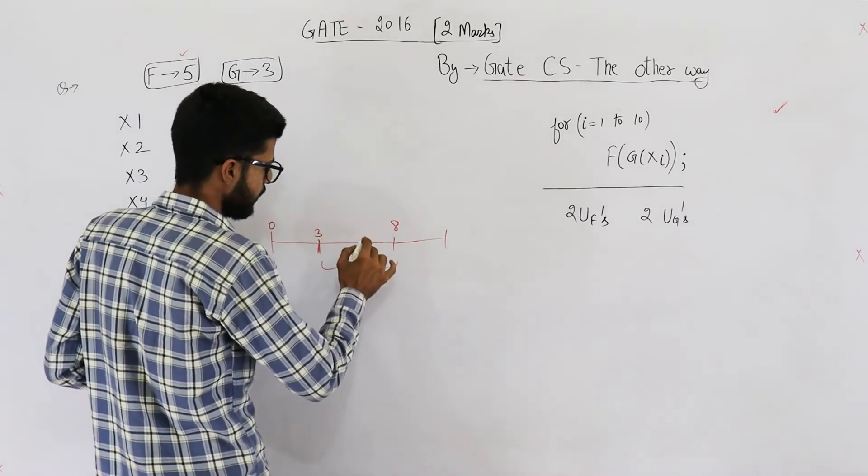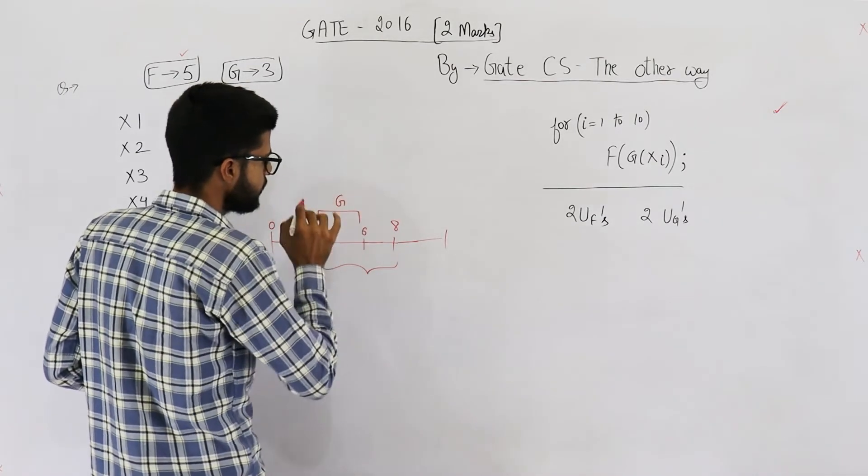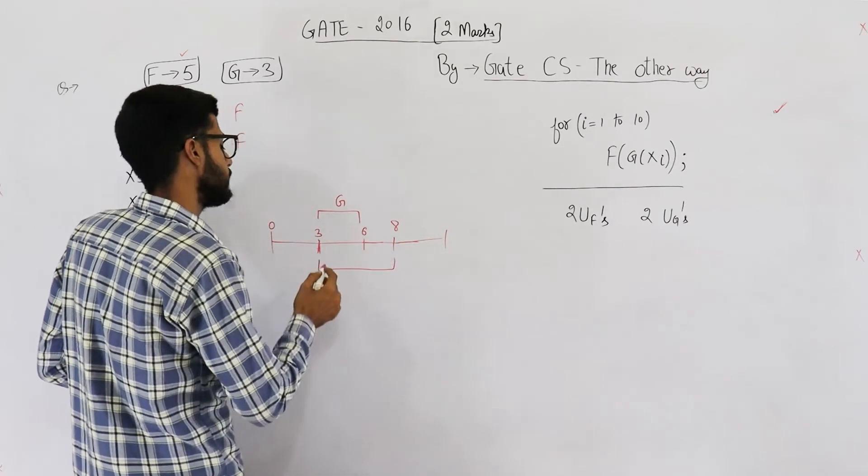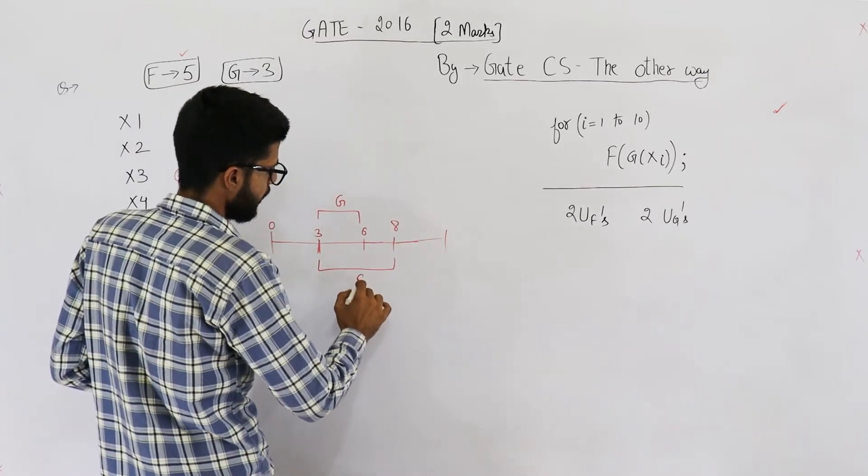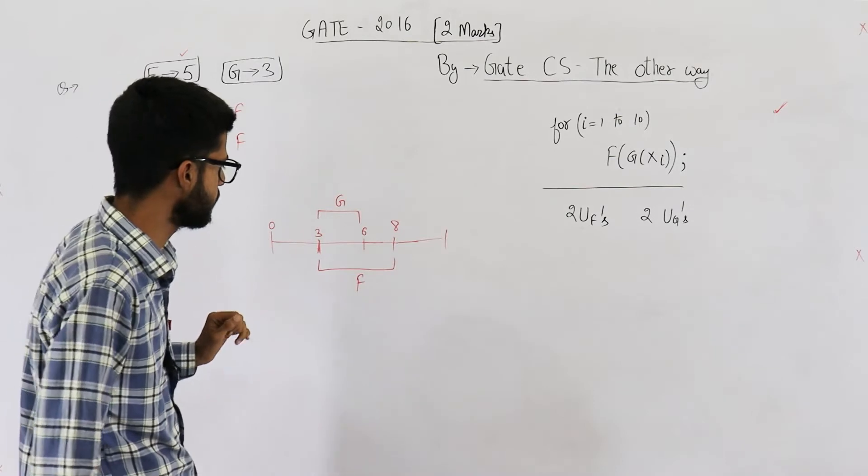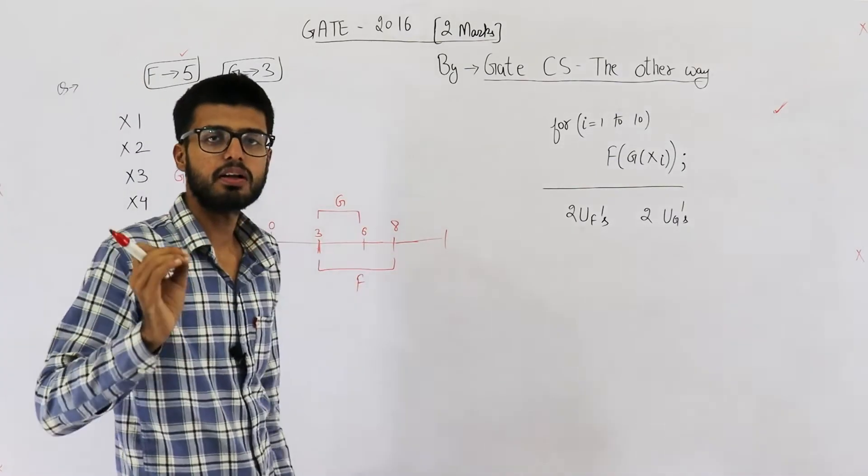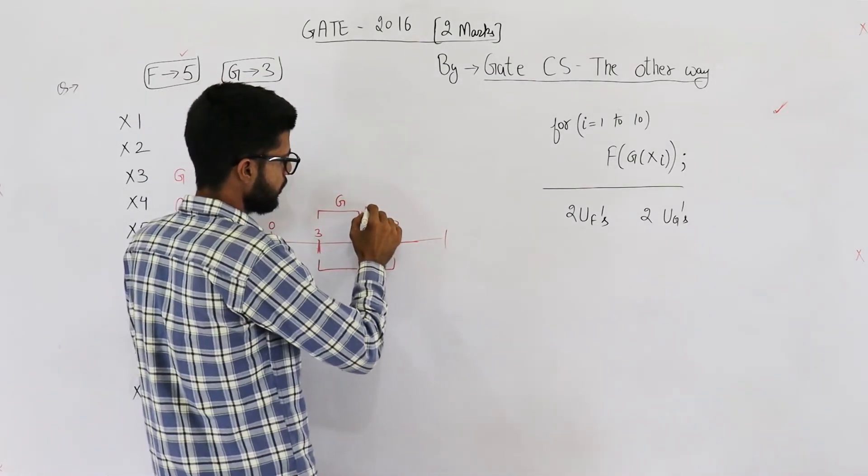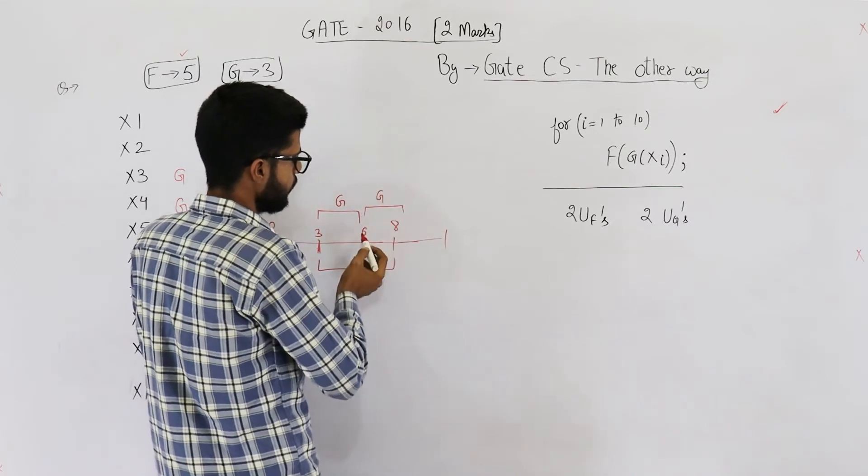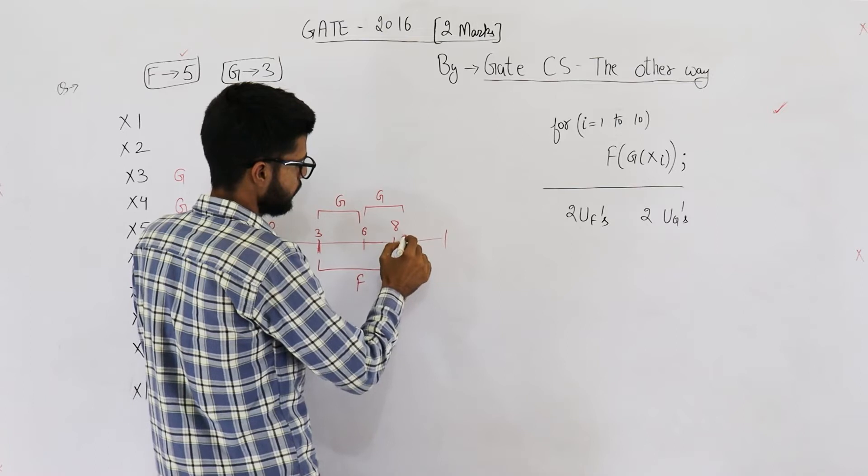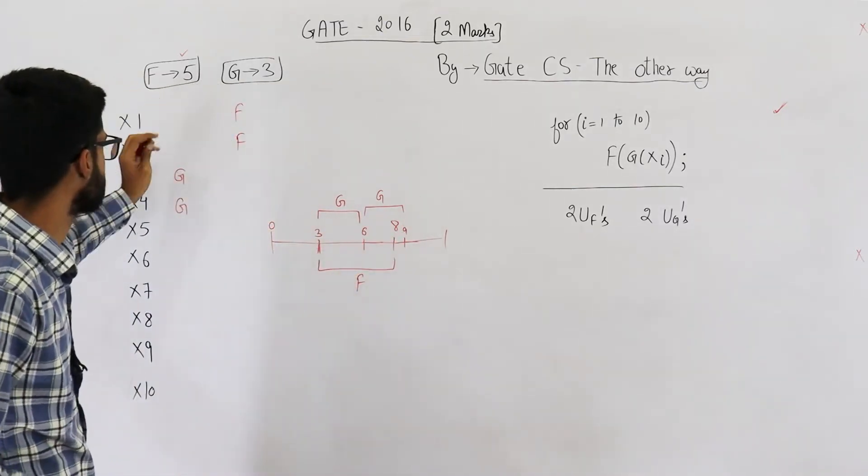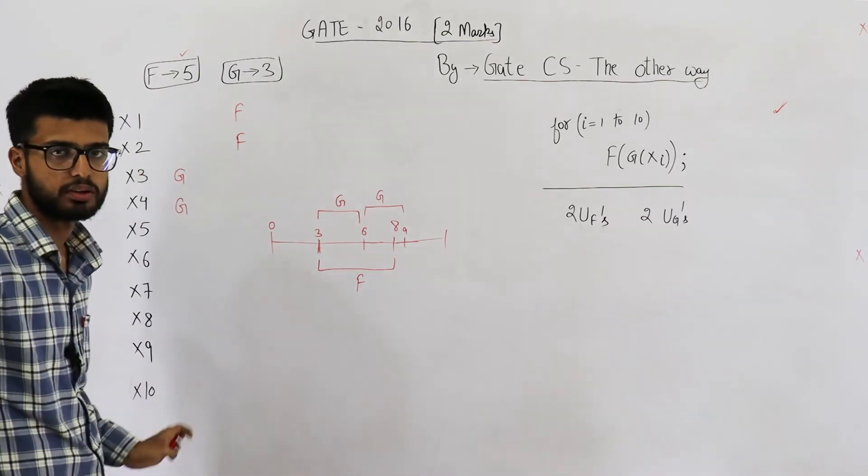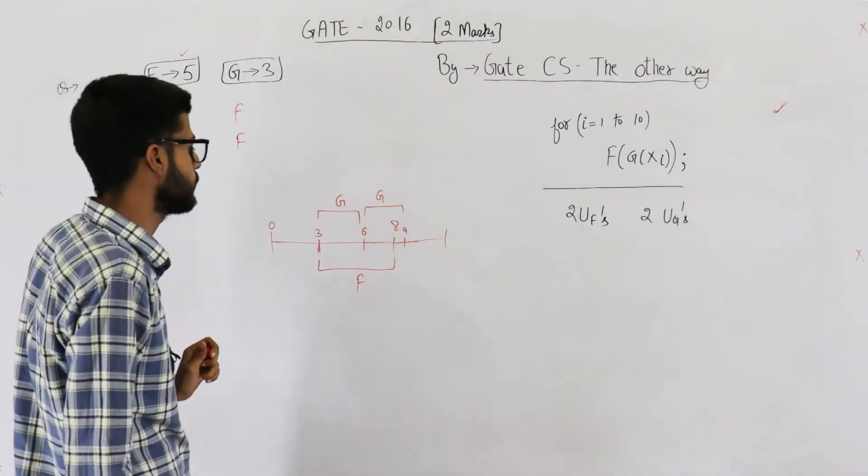So, during this time, from time 3 to 6, units g are being used and in parallel, from time 3 to 8, unit f is being used. That means, for these 3 seconds, all of the 4 units are in use. And moreover, this unit g will be used continuously. From 6 to 9, they will be used continuously. First 3 seconds here, next 3 seconds here, next 3 seconds here and so on.